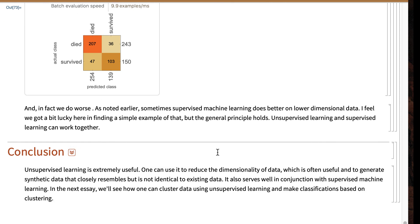In conclusion, unsupervised learning is very useful. You can use it to reduce the dimensionality of data, which is often useful in and of itself, and to generate synthetic data that closely resembles but is not identical to existing data. It also works together with supervised machine learning and can improve the performance of those efforts. In the next essay, we'll see how you can cluster data using unsupervised learning and actually make classifications based on the clustering. Thank you.